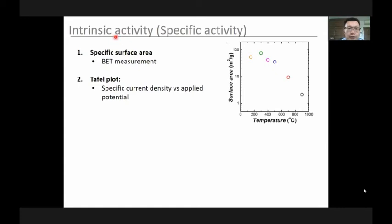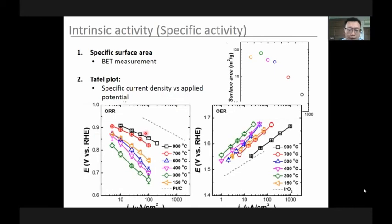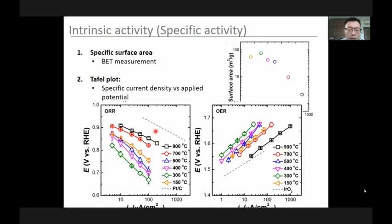To plot intrinsic activity (specific activity in electrochemistry), we used the BET method to obtain surface area, then plotted Tafel plots with intrinsic activity for these six manganese cobalt oxides. For ORR and OER, the six samples show different activities. The dashed line for OER represents iridium oxide, and for ORR it represents platinum. No catalyst is better than platinum so far. The question is: all six samples are manganese cobalt oxides, but why do they give different activities? We have already excluded surface area differences, so what is the reason?